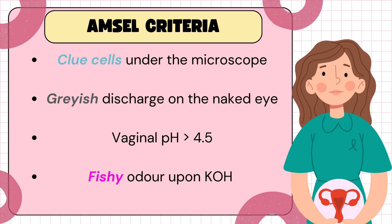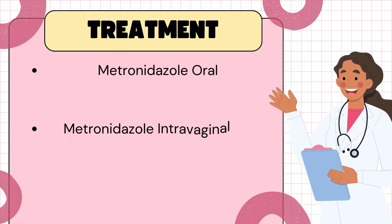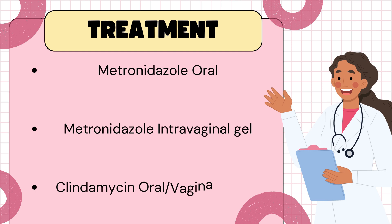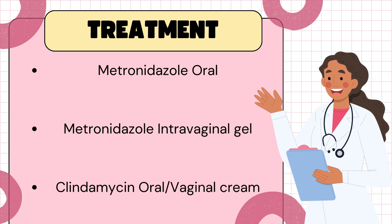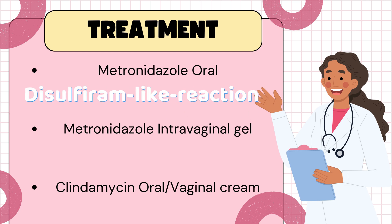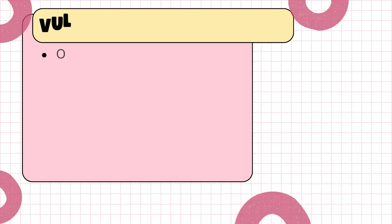When it comes to treatment of bacterial vaginosis, we can use metronidazole — which can be given either as oral or gel — or we can use clindamycin cream. If we are treating a patient with metronidazole, we have to educate them not to consume alcohol while on metronidazole treatment, because of the risk of causing a disulfiram-like reaction.